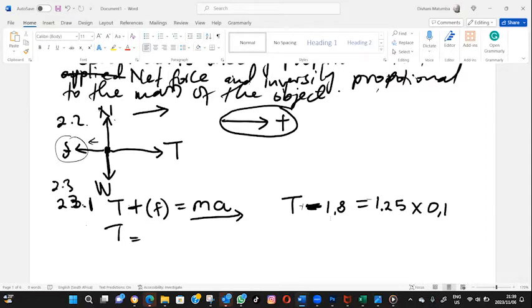Let me get my calculator and see what my tension will be. So 1.25 times 0.1 plus 1.8. When it goes to the other side, it will be positive. So this will be 1.8 plus 0.125, which will give us 1.925.